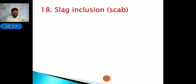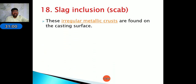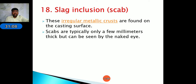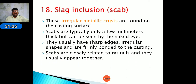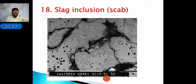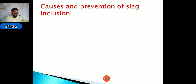Slag inclusion occurs when slag — unwanted material or unmelted particles that float on the top surface of molten metal as a layer a few millimeters thick — enters the mold cavity during pouring. This is known as a scab. Slag can be prevented by using proper flux in the melting process to remove slag particles.